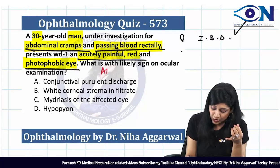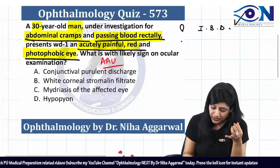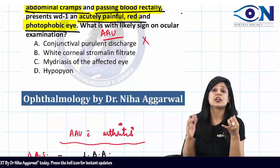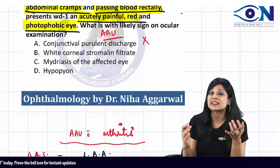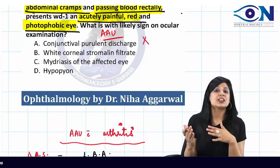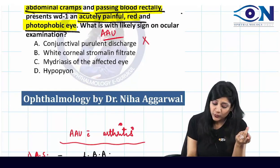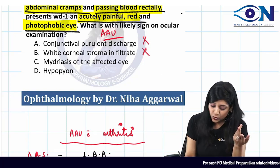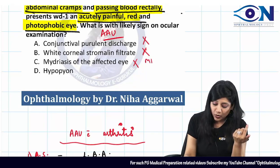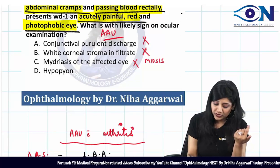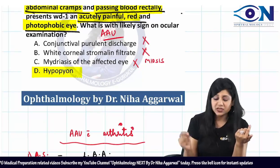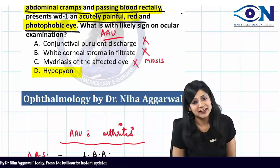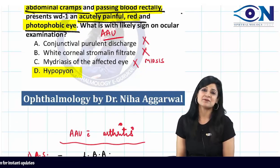What is the sign of acute anterior uveitis? Will you get conjunctival purulent discharge? No, because the most common etiology of uveitis is autoimmune or allergic — not infectious — so no purulent discharge. Corneal infiltrates? No. Mydriasis? No — you will get miosis here, not mydriasis. Therefore, the answer to this question is hypopyon, which is a definite sign of acute anterior uveitis. Thank you, and happy ophthalmology!